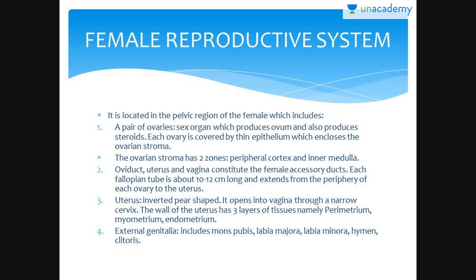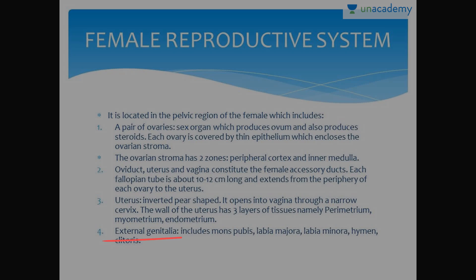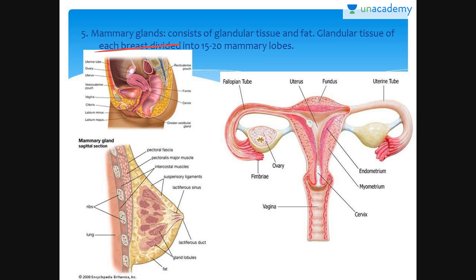The female reproductive system is also located in the pelvic region. It includes a pair of ovaries, a pair of oviducts, uterus, external genitalia, and a pair of mammary glands.